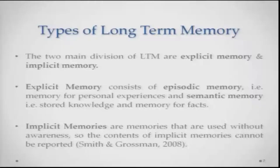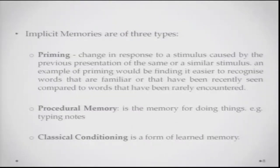If you get these two basic concepts right, this is pretty much what your long-term memory contains. Implicit memory can be of three types: priming, procedural memory, and memory gained through conditioning.